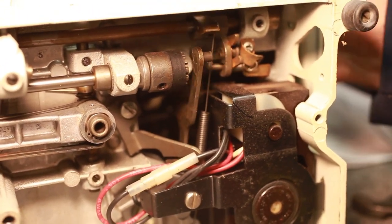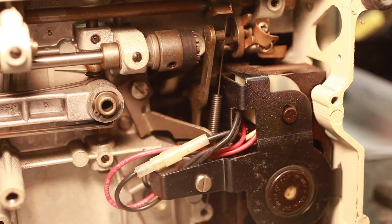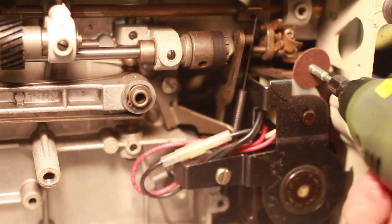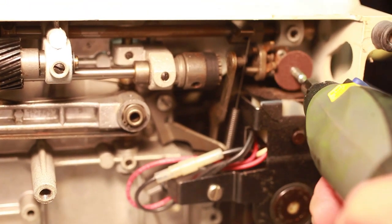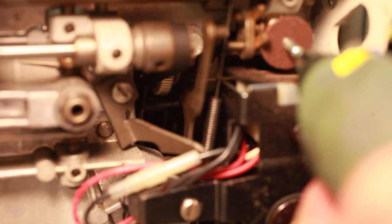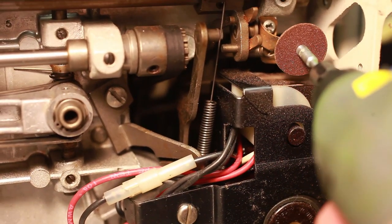The next thing we're going to do is cut off this tail of this stretch stitch fork. It doesn't serve any need and it's in the way. It has to come off. It's not going to jeopardize the operation of the machine in any way.